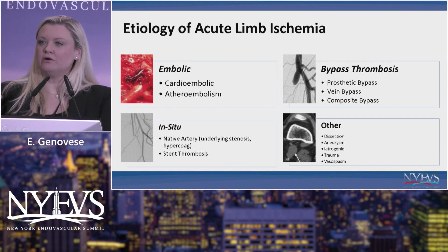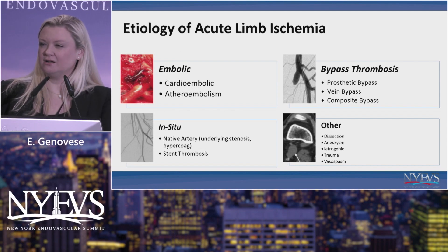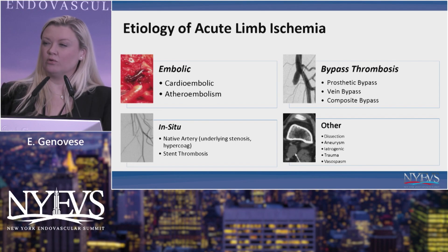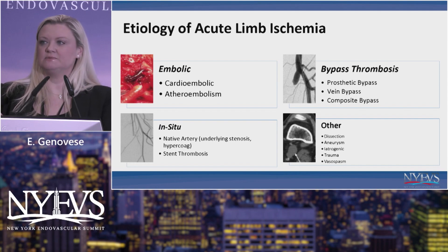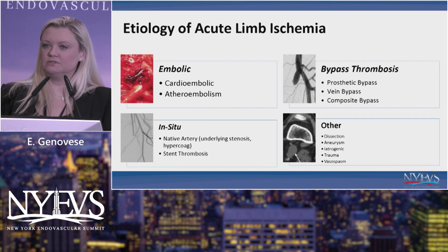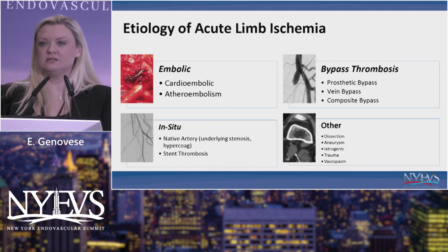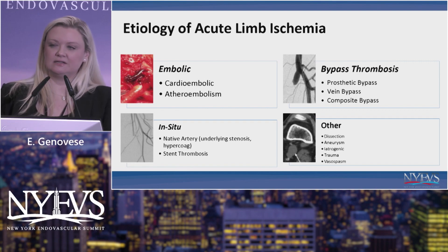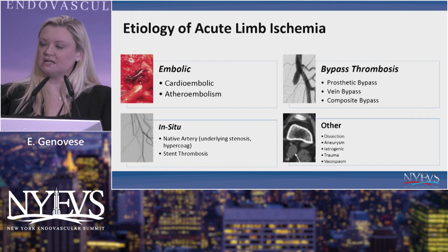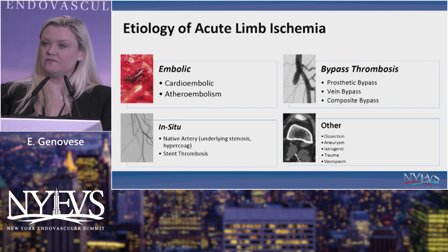When I think about acute limb ischemia, I try to group it into four categories. One is your embolic — that's going to be your well-organized thrombus. You're going to have bypass thrombosis in a variety of different types of bypasses, but when your bypass occludes, that gives you acute limb ischemia. Then you have your more in situ disease — thrombosed stents or thrombosed native disease. And then there's a miscellaneous bucket: acute limb ischemia secondary to a dissection, a thrombosed aneurysm, some iatrogenic injuries, trauma injuries, and very rarely secondary to vasospasm.